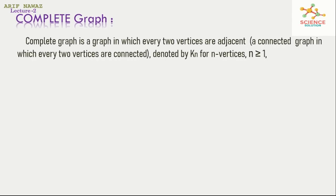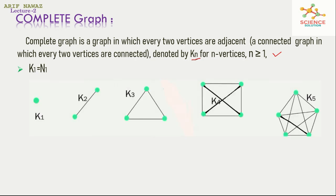Complete graph: a graph in which every 2 vertices are adjacent. In other words, a connected graph in which every 2 vertices are connected, denoted by K_n for n vertices, where n is greater than or equal to 1. K_1 is the graph of 1 vertex, equal to N_1. K_2 is the graph of 2 adjacent vertices. K_3 is the graph of 3 vertices which are all adjacent, and K_4 is the graph of 4 vertices in which every 2 vertices are adjacent.